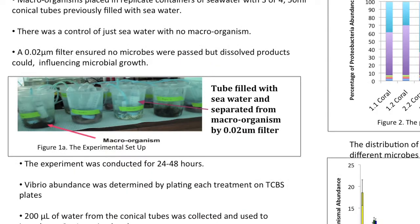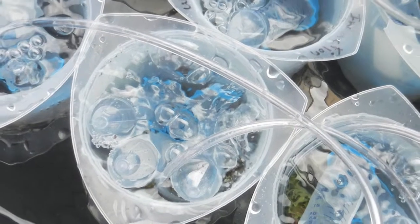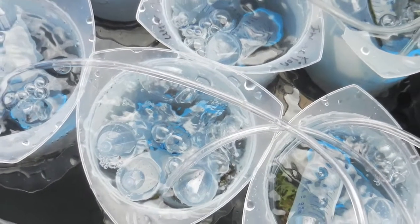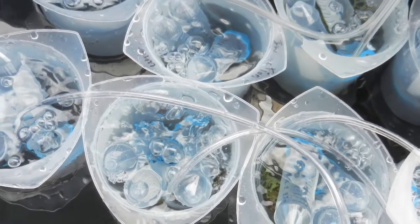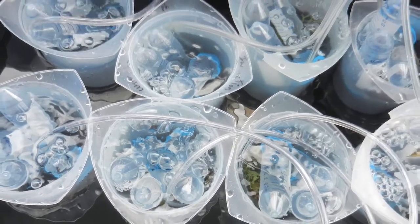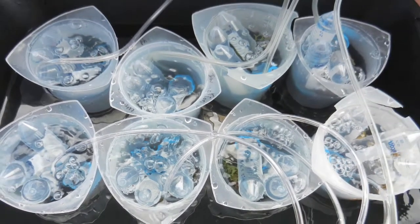We wanted to see if the corals would actually influence the growth of the microbial community and actually change the components of it. We didn't want the corals just to be shedding microbes, so we put a filter between both the corals and the water column. The filter was a 0.02 filter which would stop the movement of any microbes or viruses. So anything dissolved — being leached or coming off the coral or the algae — would actually go into the water column. We let that run overnight and then collected the microbes and conducted some metagenomic analysis on them.